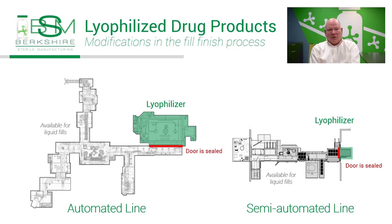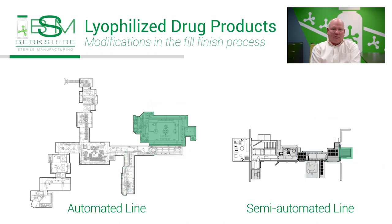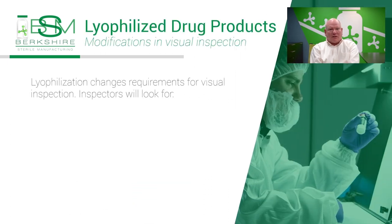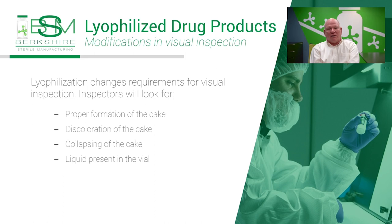These lyophilizers are sealed off while the cycle is running, which allows us to VHP the other chambers in the filling line and perform liquid fills of other products while the lyo cycle is occurring. This reduces the amount of time that our filling line is out of commission. Once the cycle is complete, we sanitize the chambers with vapor hydrogen peroxide, unload the product in the isolator, and transport the vials to the capper. Lyophilization helps protect the drug products, and inspectors look for proper formation of the cake, discoloration, collapsing, and ensure there is no liquid present in the vial.